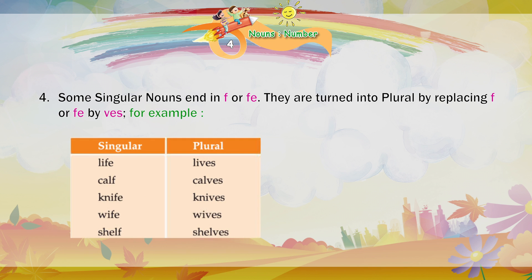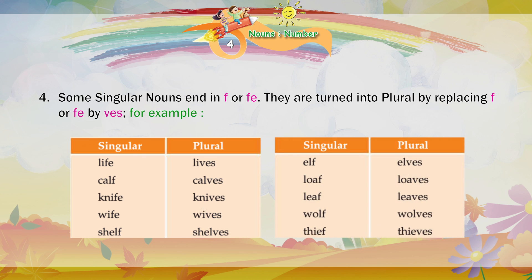Singular — Plural. Life — Lives. Calf — Calves. Knife — Knives. Wife — Wives. Shelf — Shelves. Elf — Elves. Loaf — Loaves. Leaf — Leaves. Wolf — Wolves. Thief — Thieves.